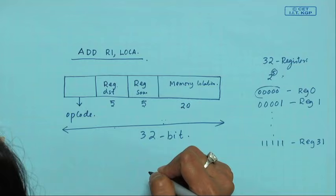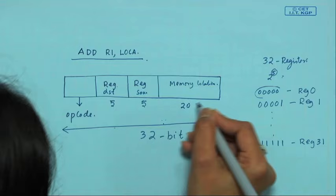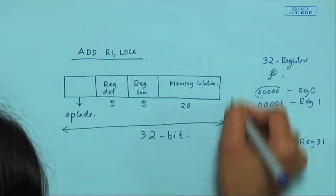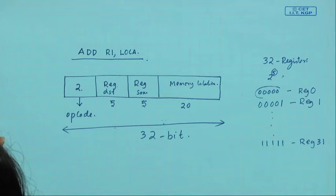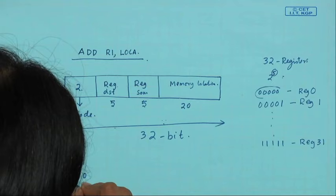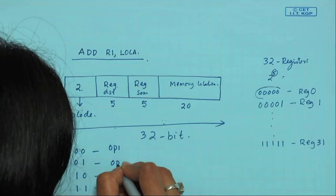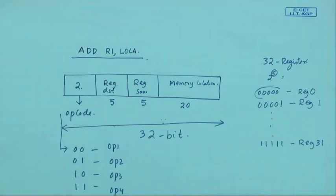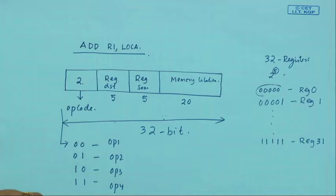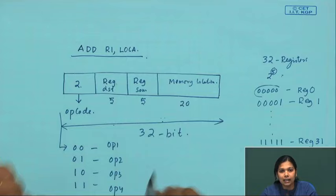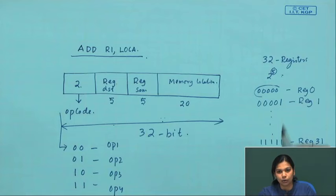If we can specify a 20-bit memory location, that uses 20 bits. Then 5 + 5 + 20 = 30 bits are used, leaving only 2 bits for the opcode. With 2 bits for opcode, we can have a maximum of 4 operations: 00, 01, 10, and 11. This is just an example to show how instruction format works; it does not correspond to a real machine.